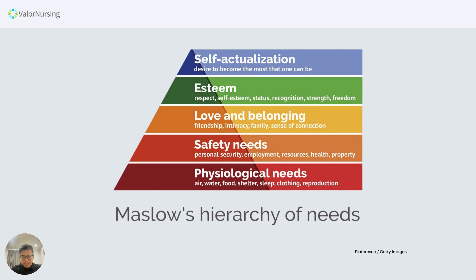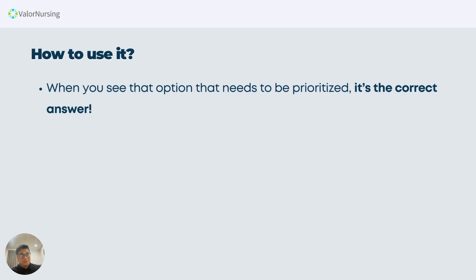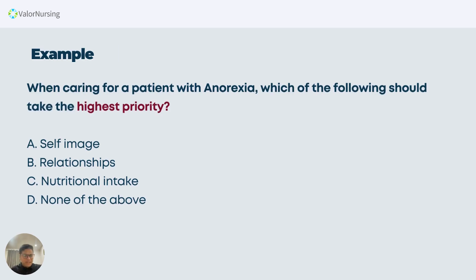How to use it is simple: when you see an option that needs to be prioritized, just use the Maslow's Hierarchy pyramid, and you will land on the correct answer. Let's have an example question.